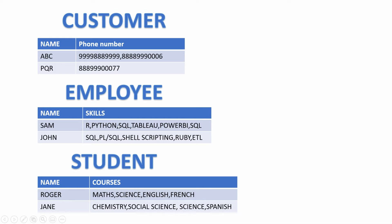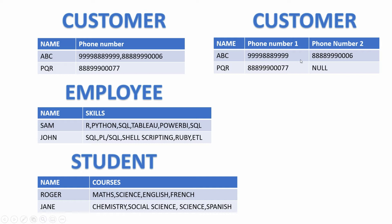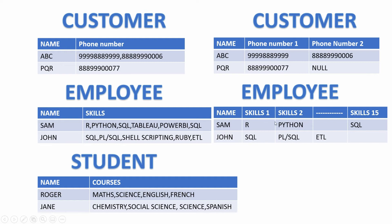The maximum number of phone numbers are two, so one can argue that we can create our table structure like this. But what if a customer gets three numbers? How are we going to accommodate that? What about skill set? If an employee knows 15 technologies, are we going to create 15 columns?